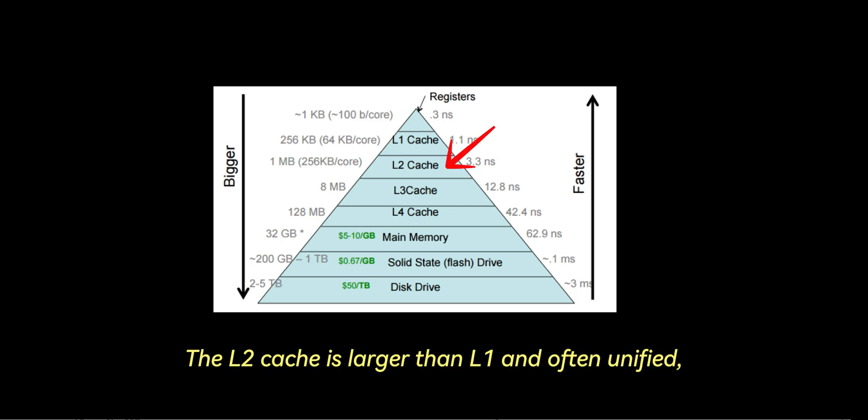The L2 cache is larger than L1 and often unified, holding both instructions and data together. It's slower than L1, but still provides quick access to frequently accessed data. It is typically accessed in 10-20 CPU cycles.